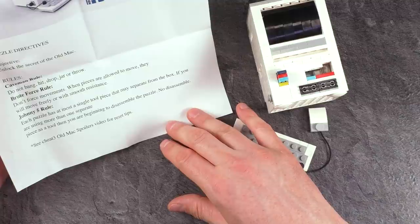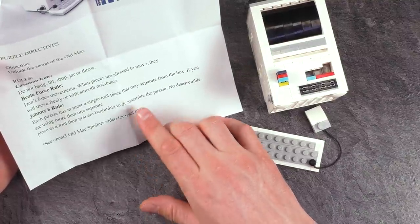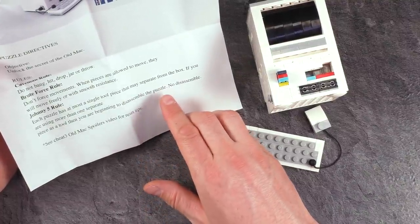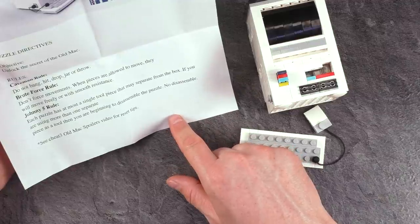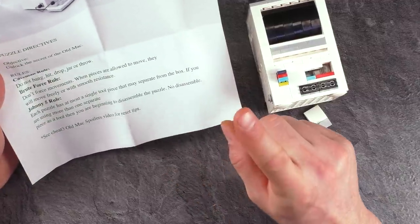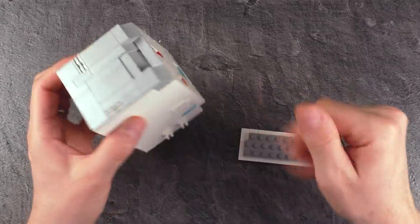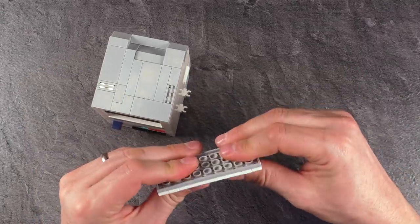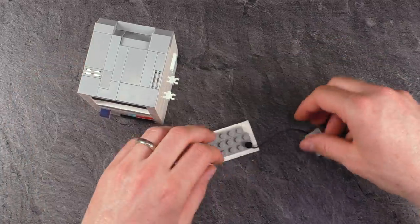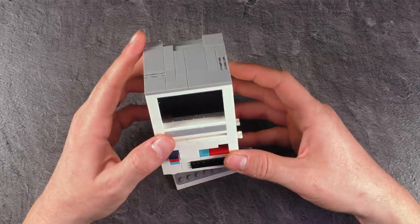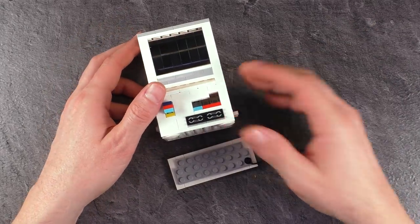Johnny Five rules. Each puzzle has at most a single tool piece that may separate from the box. If you're using more than one separate piece as a tool, then you are beginning to disassemble the puzzle. No disassemble. Also, good point. I will not touch anything except this thing here. Got the keyboard here. I think this probably has no use. But let's see. We're going to find out later after the spoiler break I would propose. And after the spoiler break, you're going to see also my first attempt trying to solve the old Mac puzzle by Cheat 3 puzzles.